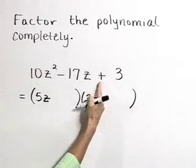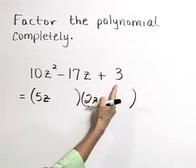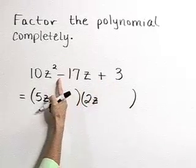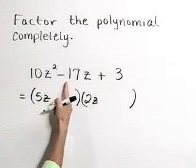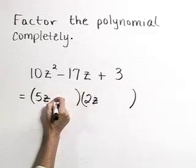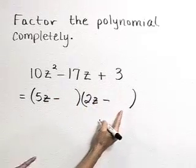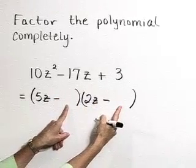Now as we look at this last term, which is a positive 3, yet our middle term gives a negative value. And so to get a positive product, yet a negative sum of our inner and outer products, we know that these two last terms of our binomials are going to have to both be negative.